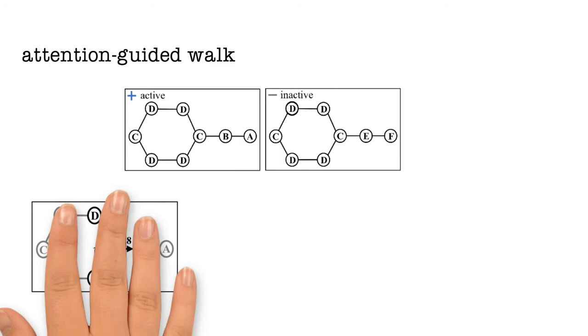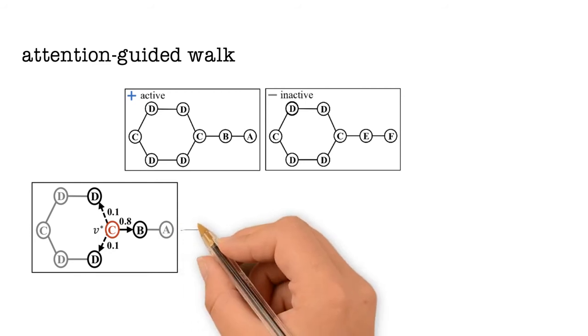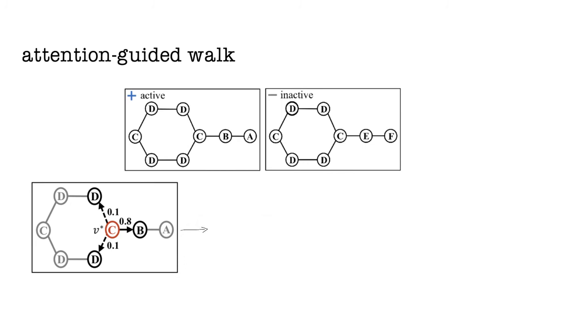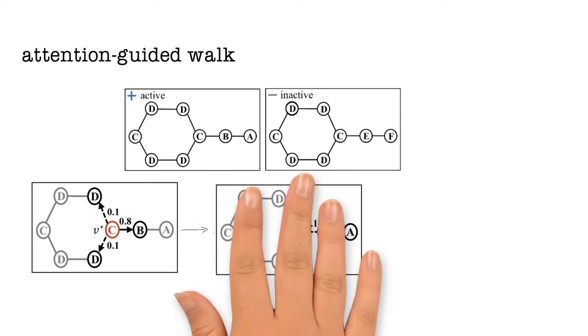For example, our agent starts at the node C. It then needs to decide whether it wants to go to a D node or a B node. The attention mechanism is telling it that B nodes are more important. Because of this, our agent ends up moving to B.